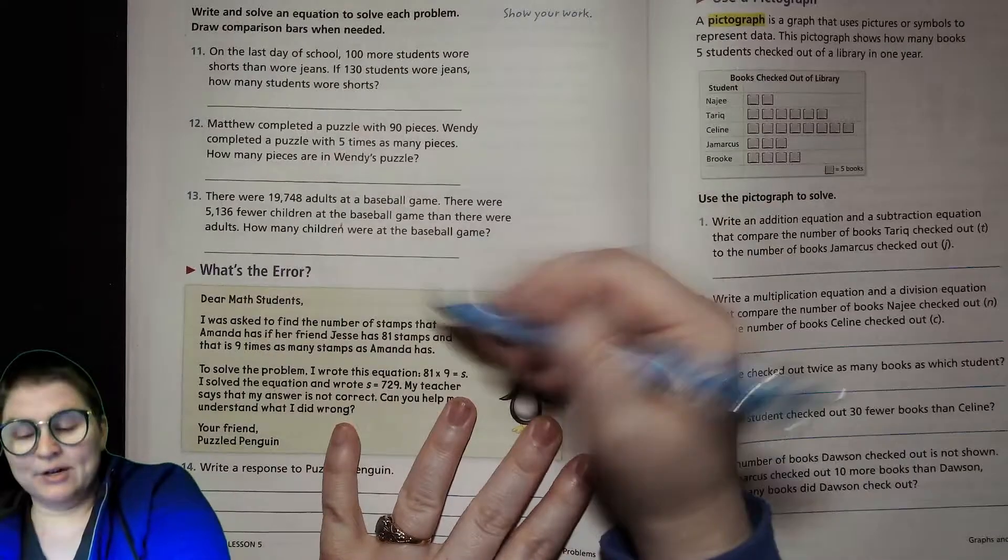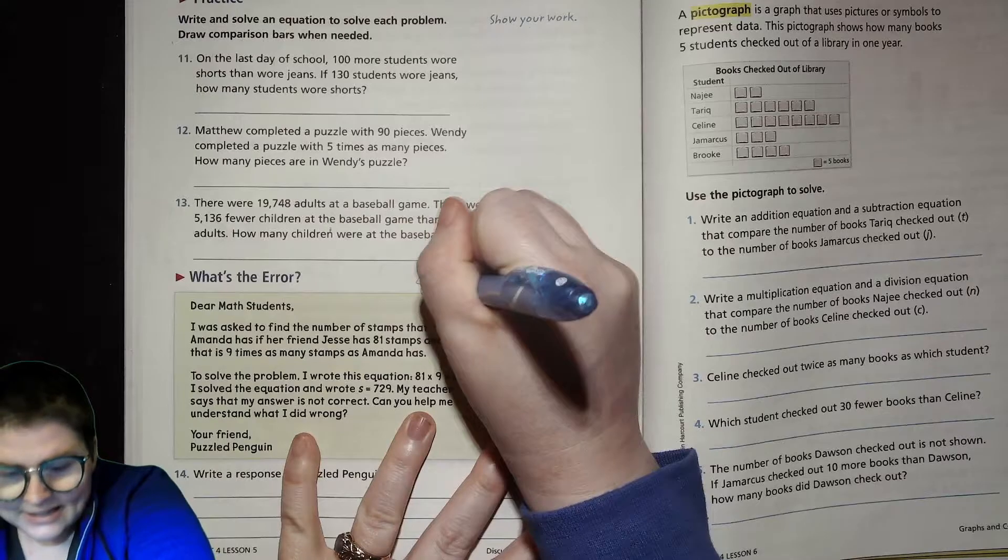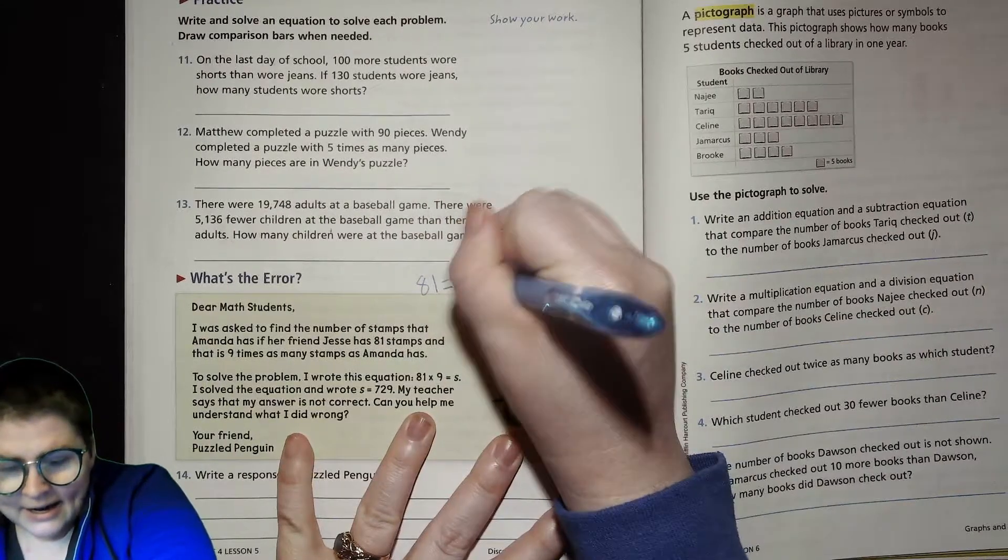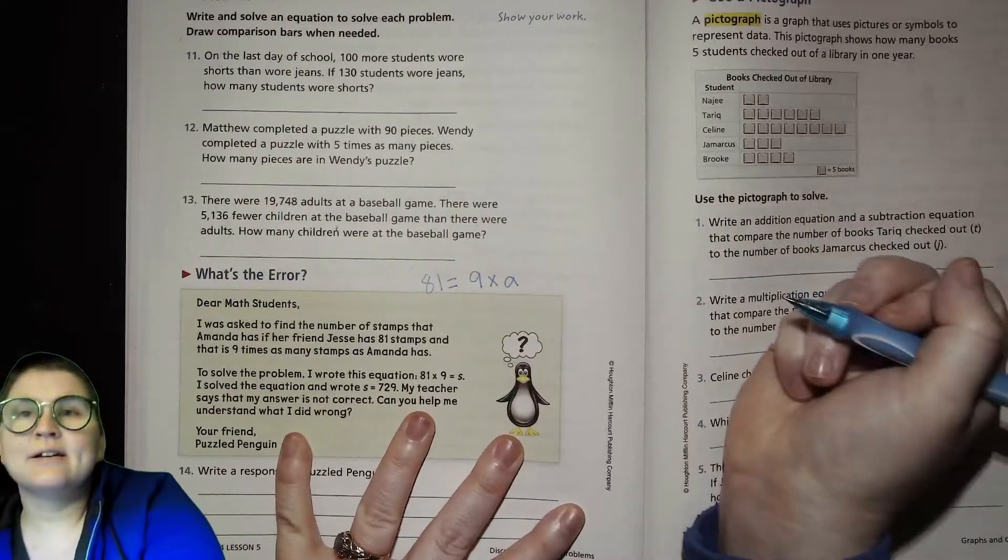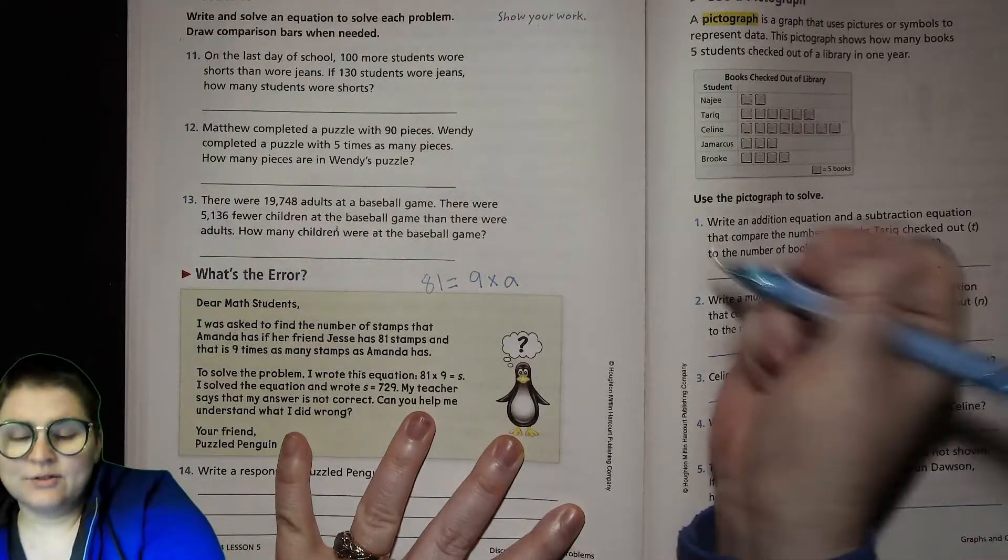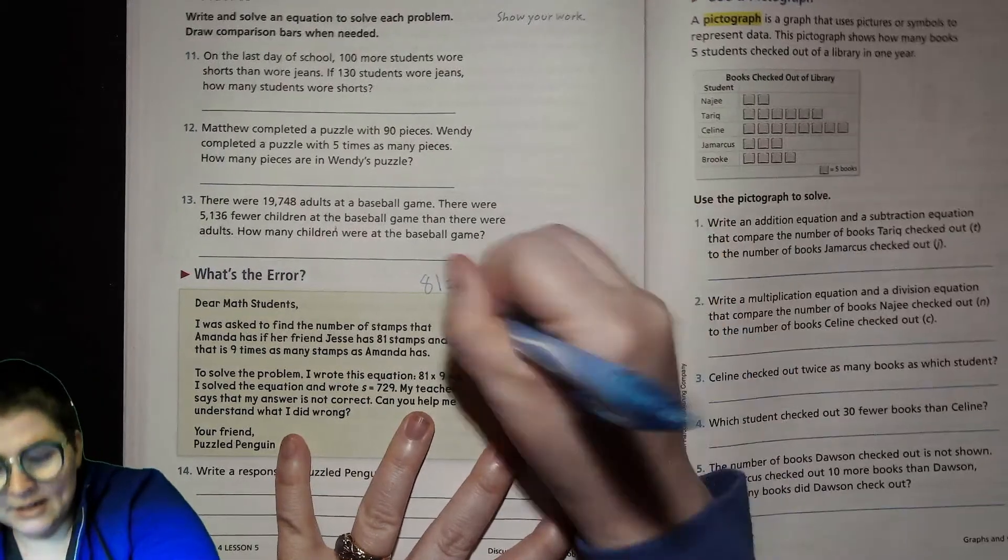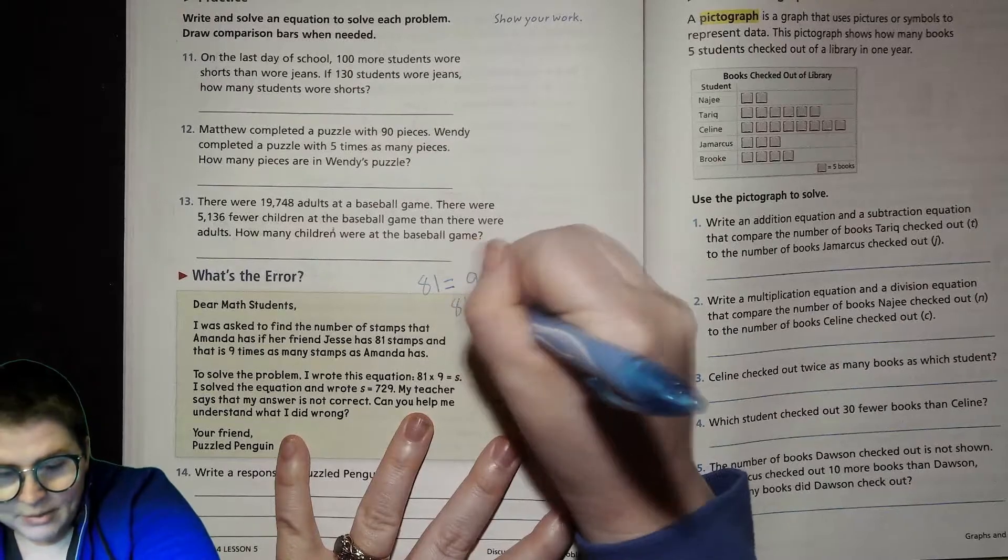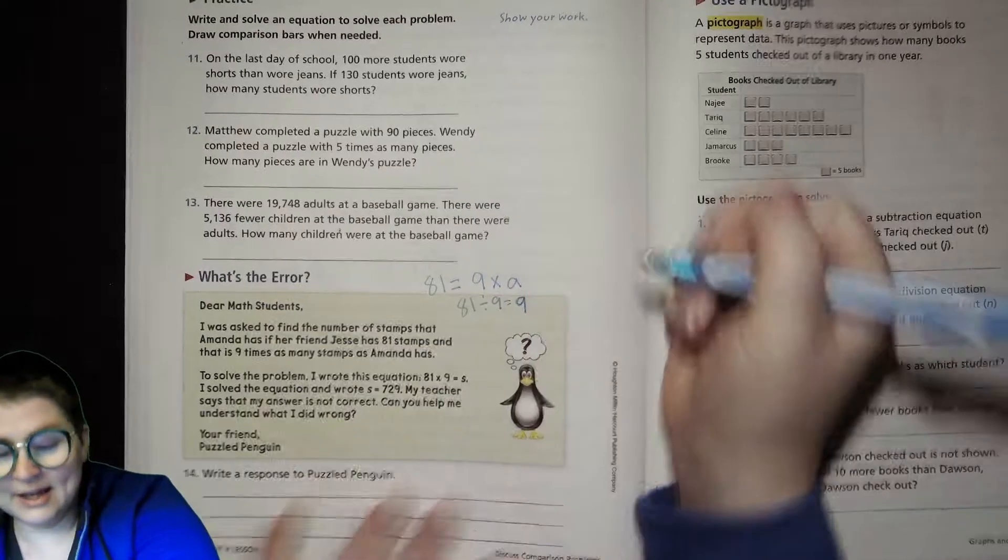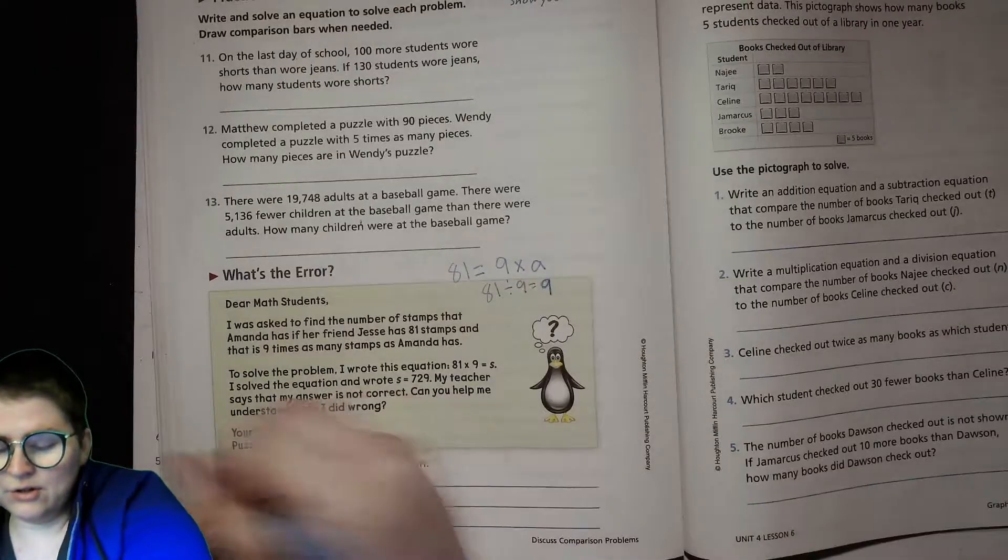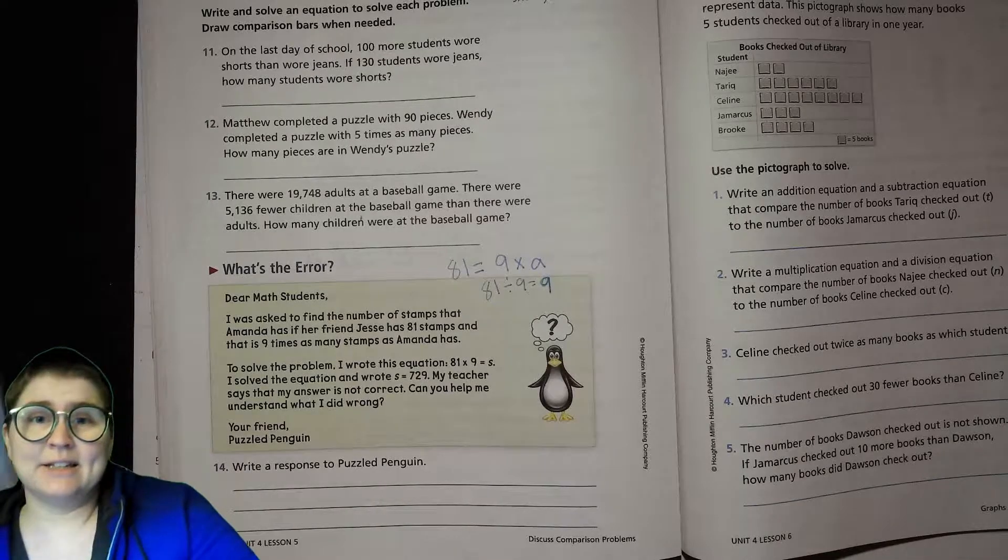I'm going to write out the equation that I would use. So 81 is 9 times what Amanda has. So rather than doing 81 times 9, what we really want to do is 81 divided by 9, which is 9, or a equals 9. So that's the problem - you can write your own explanation, but that is the problem.